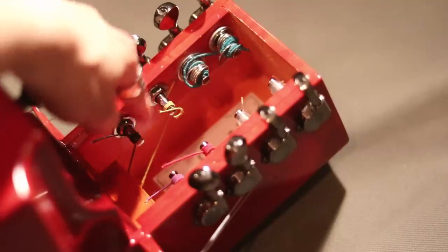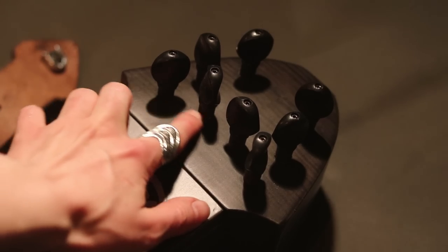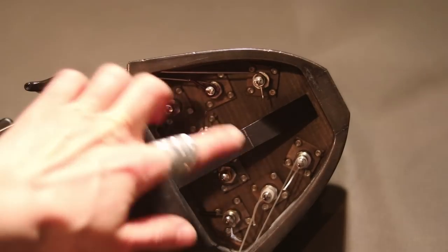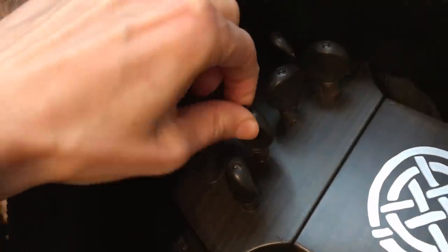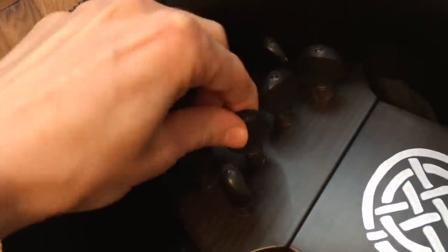We are starting from the head. Here's where the melody strings are hooked on the tuning pegs. You can tune the strings by turning the pegs around. Loosening the strings makes the pitch lower, tightening the strings makes the pitch higher.